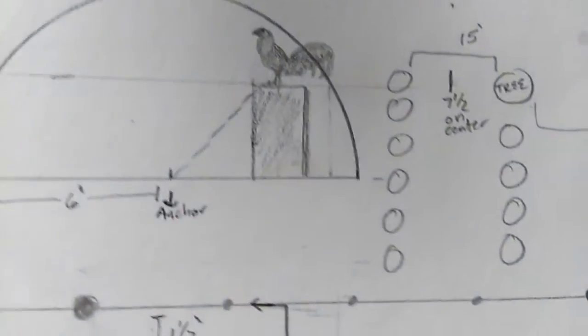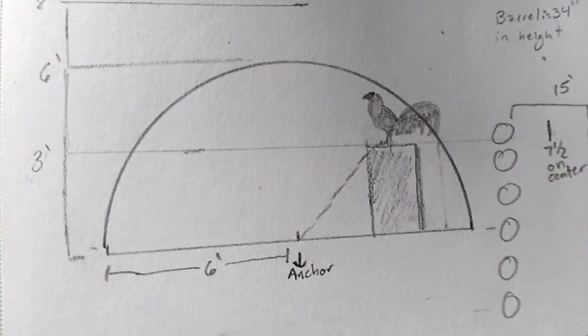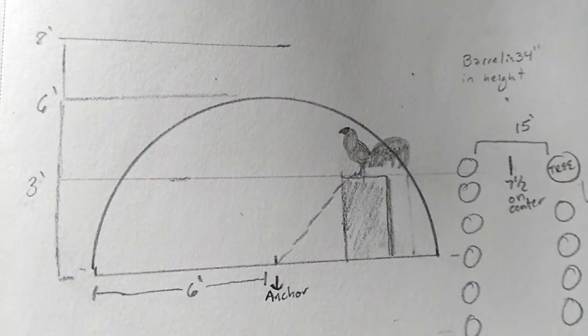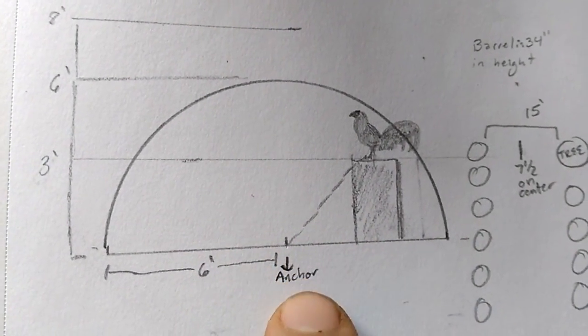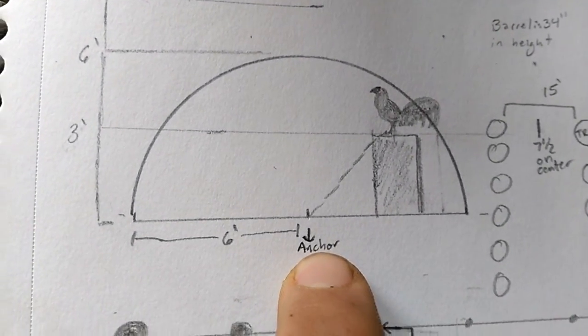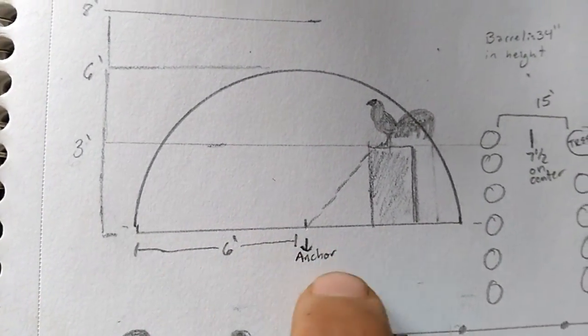Now let's talk about positioning the anchor in relation to the barrel and any low hanging limbs. So again you've got your anchor in the center of your circle, you're going six foot out. That also means that bird can go six foot high.